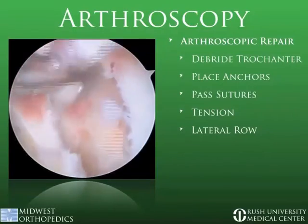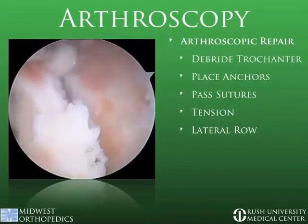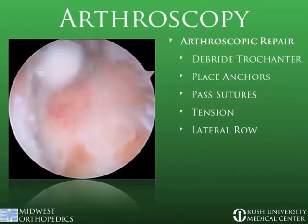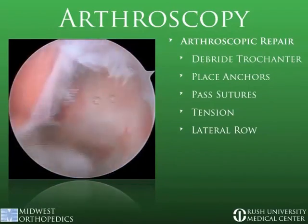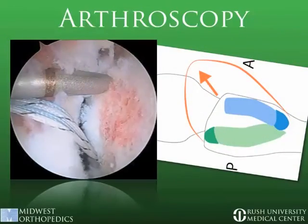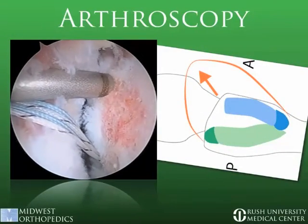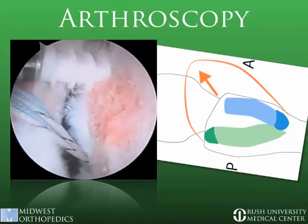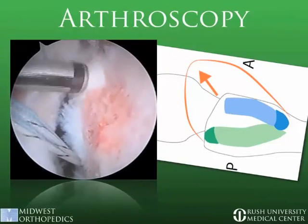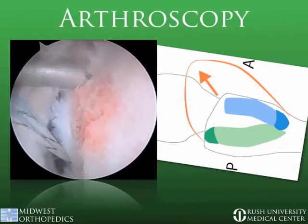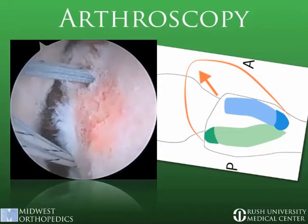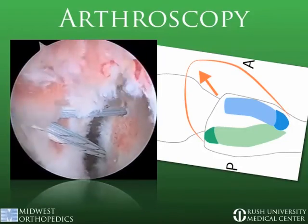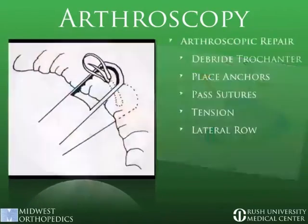Once the pathoanatomy is defined, you can begin the endoscopic repair. This begins with debriding the cortical bone using a burr or bone cutting shaver to create a bleeding surface to promote healing. One then begins planning suture anchor placement, remembering the anatomy of the anterior and middle portions of the gluteus medius. These are usually placed in a proximal to distal fashion. The authors prefer two 4-5 millimeter Arthrex biocomposite screws loaded with two number two fiber wire.